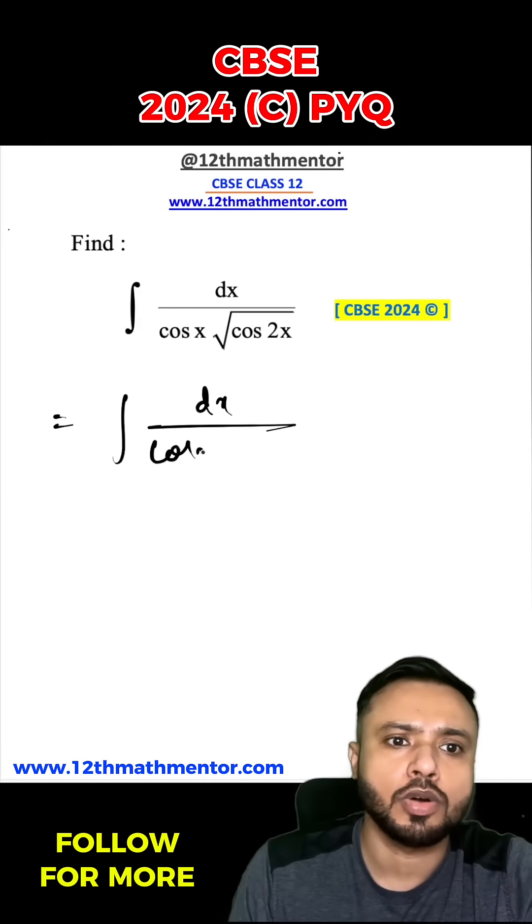To solve this integral, I'm going to write cos 2x as cos²x minus sin²x because that's the formula of cos 2x.